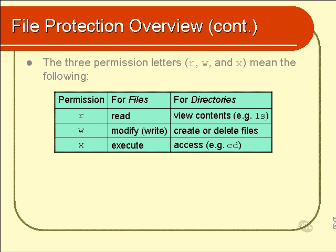We're going to talk about that in the last module of this chapter — I'm going to show you a serious security loophole in Unix security. It's only serious because most people don't know about it, so they're not aware that they're leaving themselves with a security risk. Finally, the execute permission for a directory means that you can actually go there using CD — you can access the directory.